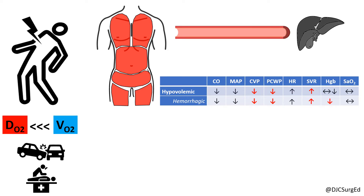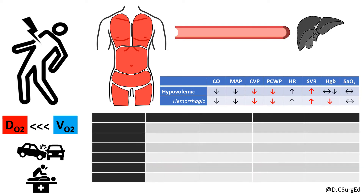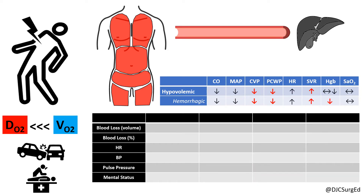Hemorrhagic shock can be categorized by the amount of blood loss and associated clinical signs and symptoms. Class 1 shock accounts for up to 750 cc's of blood loss, or 15% of blood volume, and has no hemodynamic abnormalities.